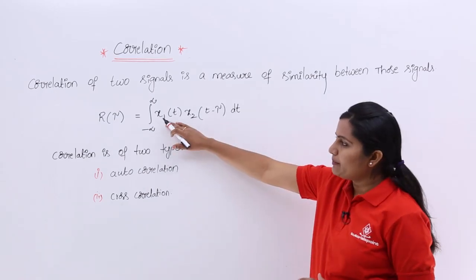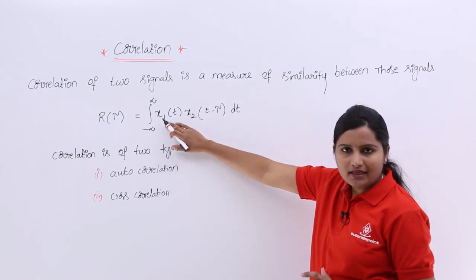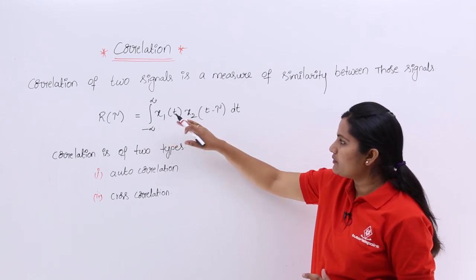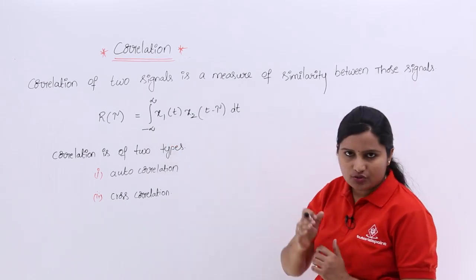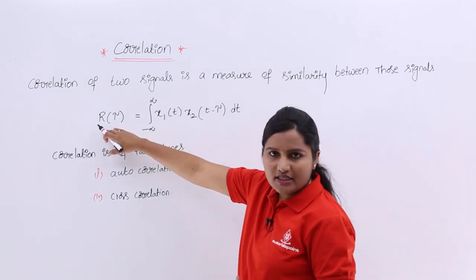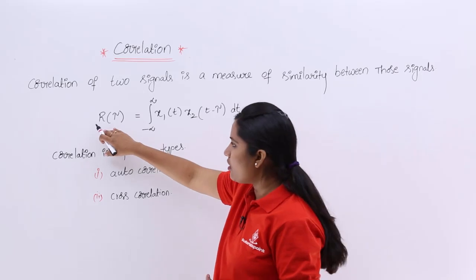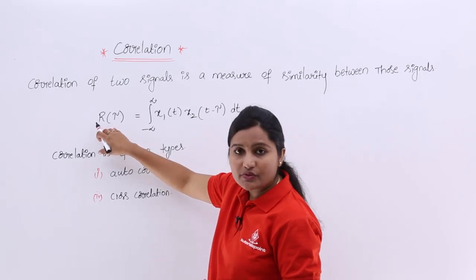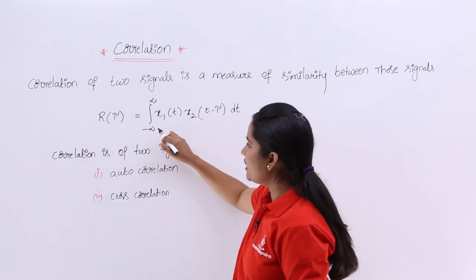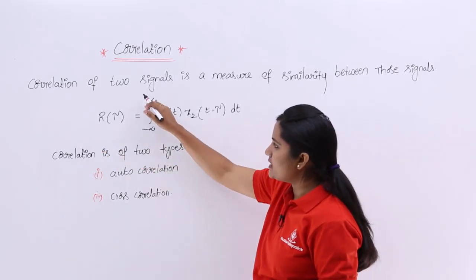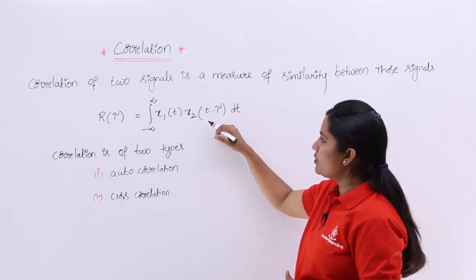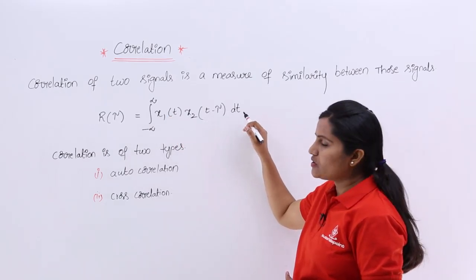For example, if you want to calculate the measure of similarity between x1 and x2, the general representation of the correlation function is always in terms of r of tau. r of tau is equivalent to the integral from minus infinity to infinity of x1(t) · x2(t minus tau) dt.